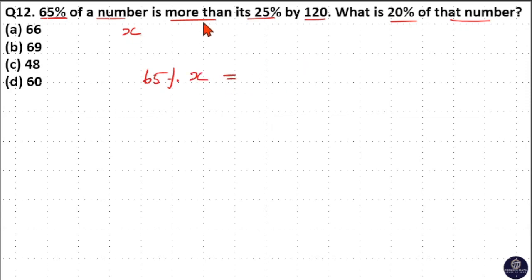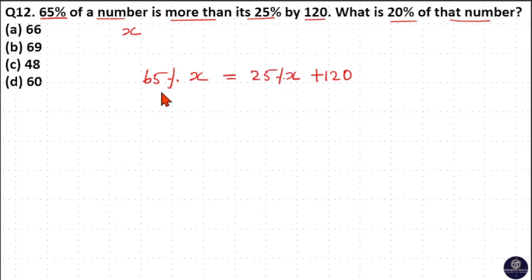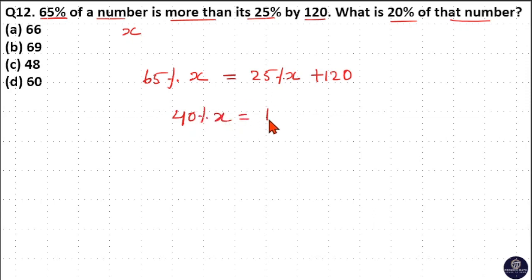So 65 percentage of x is 120 more than its 25 percentage. The difference between 65 percentage and 25 percentage is 40 percentage. So 40 percentage of x is 120. Since 40 goes 3 times into 120, 1 percentage of x is 3.